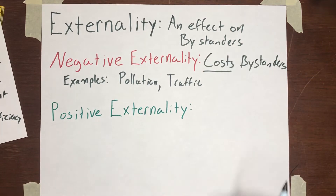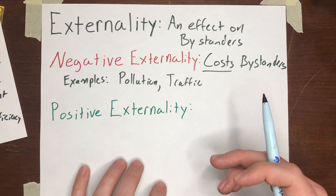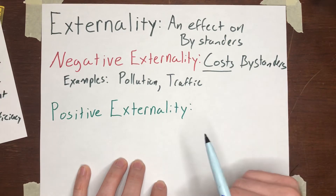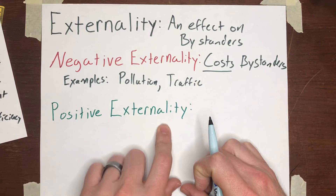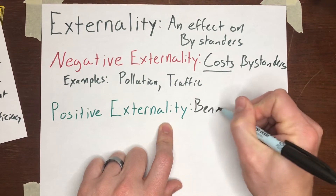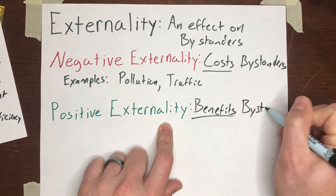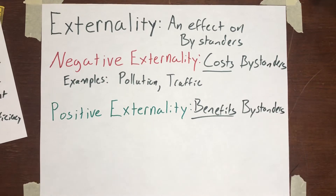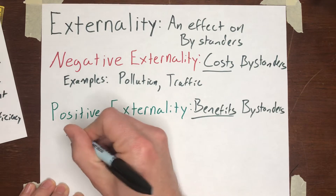Negative externalities tend to hog up all the attention — mostly because they're easy to see and we get more worked up about things that bother us than about not having more good things we could be having. But positive externalities do exist. That's when something you are doing benefits bystanders — you're imposing an external benefit onto other people who are not the buyer and not the seller; they are uninvolved in the transaction.